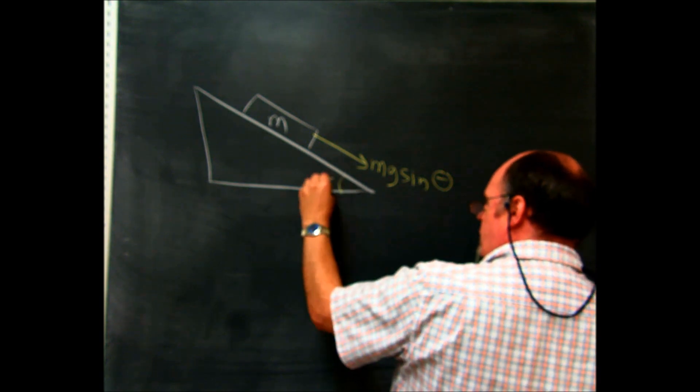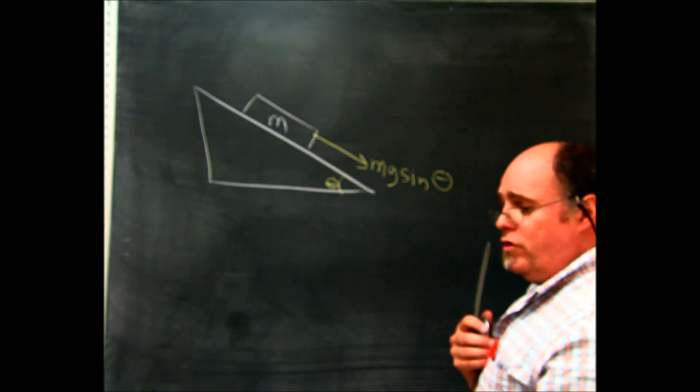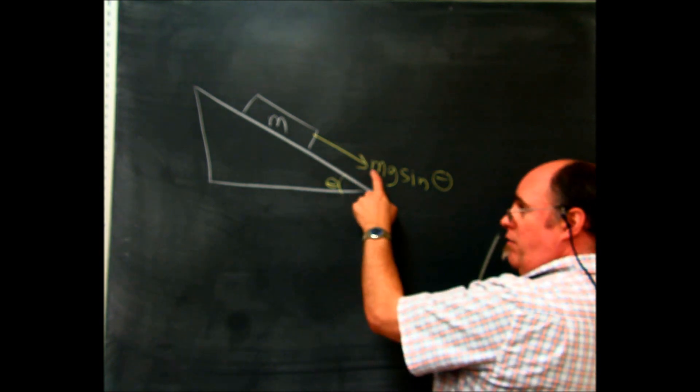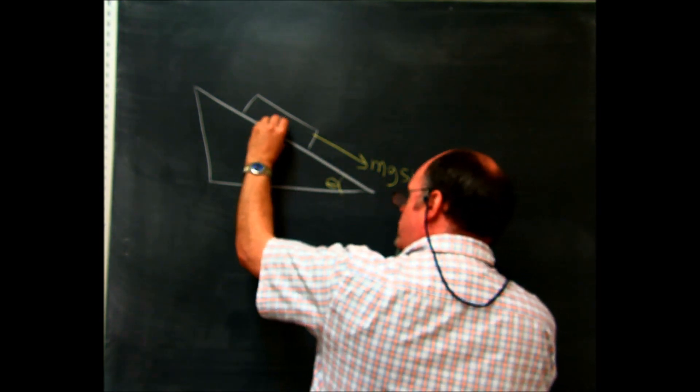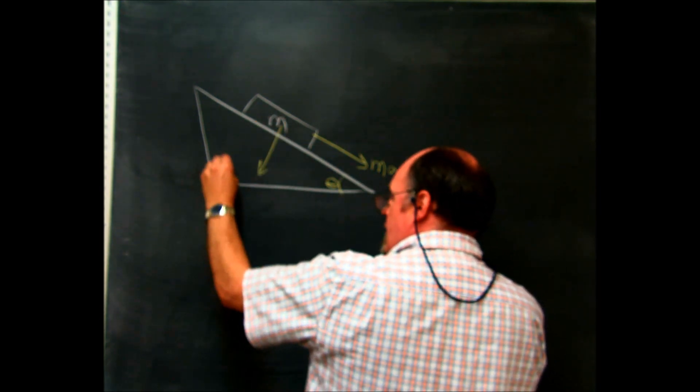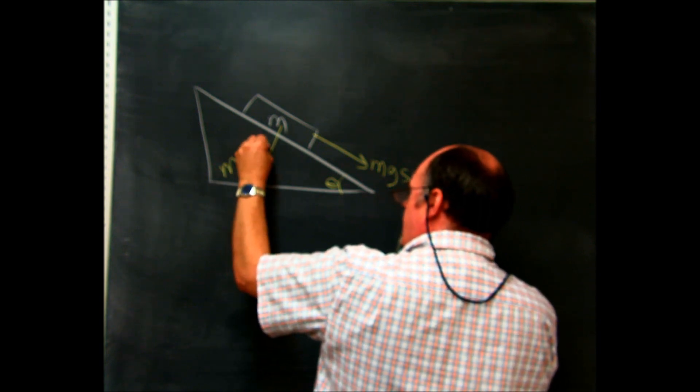By the way, this is the angle. And then there was another force called the parallel force, sorry, that's the parallel force. There was another one called the perpendicular force which was going this way, and this was mg cosine of the angle.